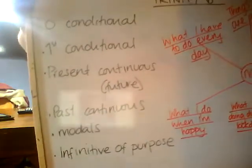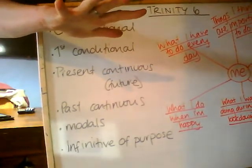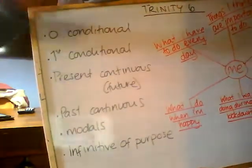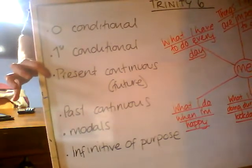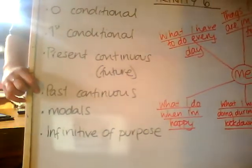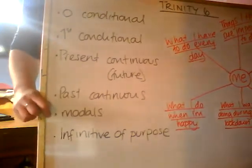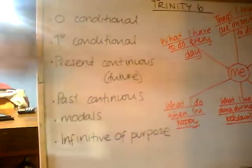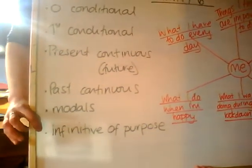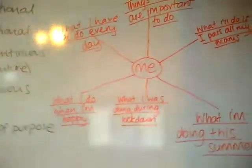So first we have zero conditional — remember, if you drop an egg, it breaks. First conditional: when I feel happy, I blah blah blah. Present continuous to talk about a fixed plan in the future. Past continuous to talk about an action that was in progress in the past. The modal verbs: have to, need to, don't have to, must — for example. And finally, the infinitive of purpose.